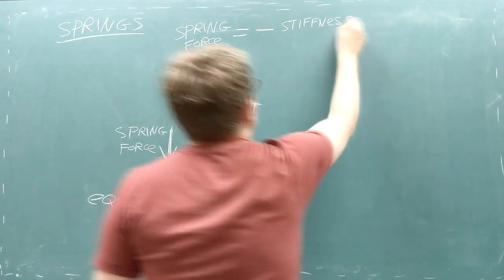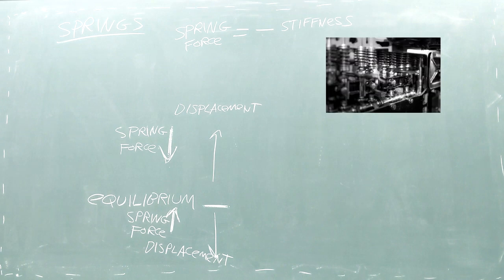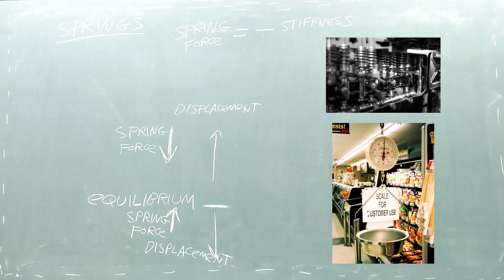Second, there's a constant called the spring stiffness. This number refers to how much the material of the spring allows the object to stretch. A high spring stiffness indicates a very strong spring, like a shock absorber, while a low spring stiffness indicates a very weak spring, like a grocery store scale.